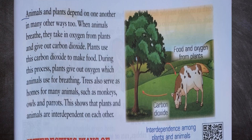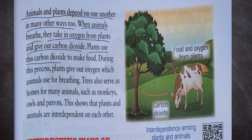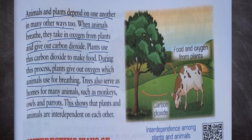Animals and plants depend on one another in many other ways too. When animals breathe, they take in oxygen from plants and give out carbon dioxide. Plants use this carbon dioxide to make food. During this process, plants give out oxygen which animals use for breathing. Trees also serve as home for many animals such as monkeys, owls and parrots. This shows that plants and animals are interdependent on each other.